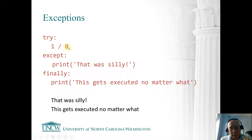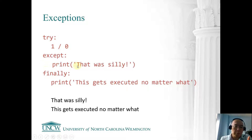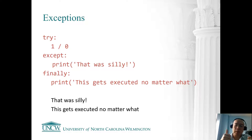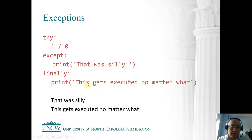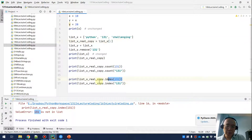For example, we try one divided by zero — this can't be done and causes a runtime error. Python won't give a red line before running, but at runtime we get an exception, which triggers the except block, and we print 'that was silly.' Then we move to the finally block and print 'this gets executed no matter what.' So we see both messages: one from except and one from finally.